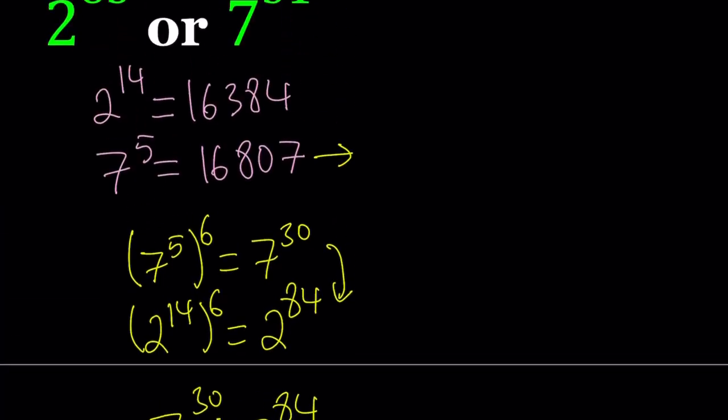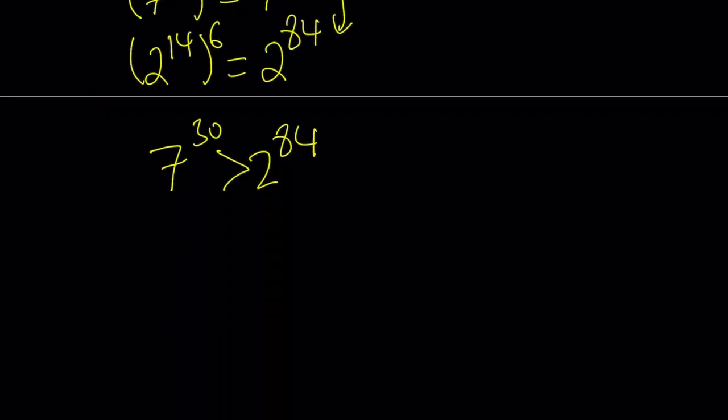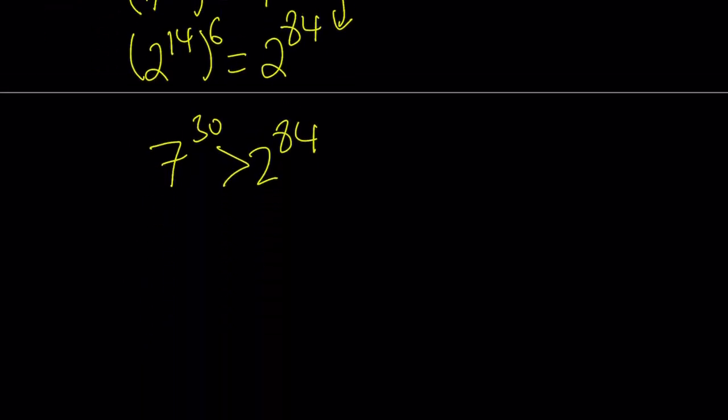This is basically what we're going to use as a starting point. Now, notice that we are trying to compare 2 to the power of 83. And we do know that 2 to the power of 84 is greater than 2 to the power of 83. We also want to compare this number to 7 to the power of 31.